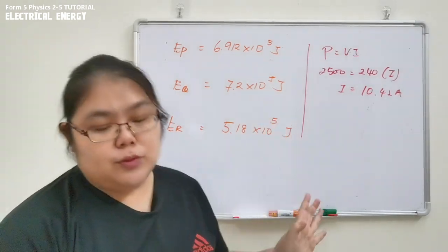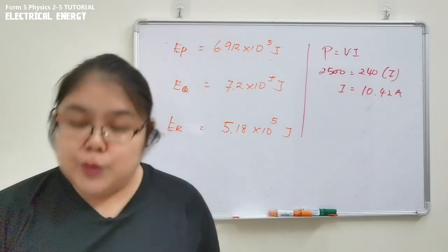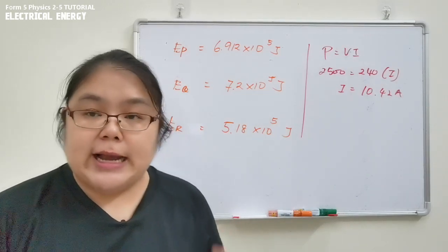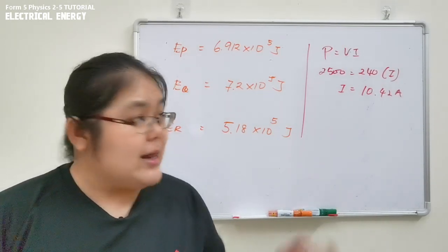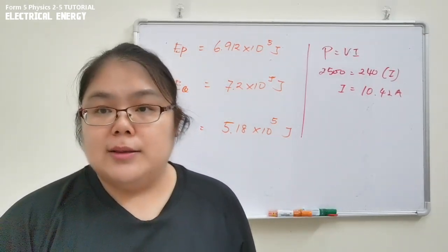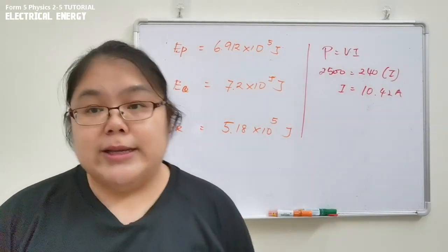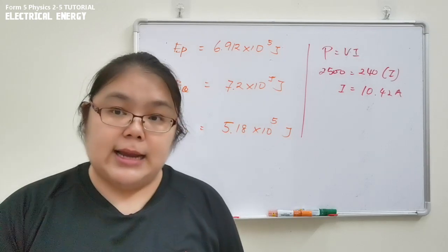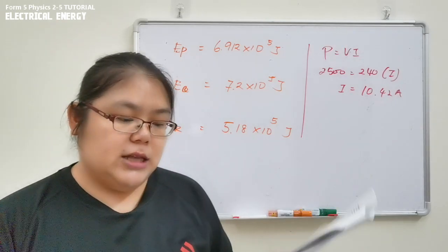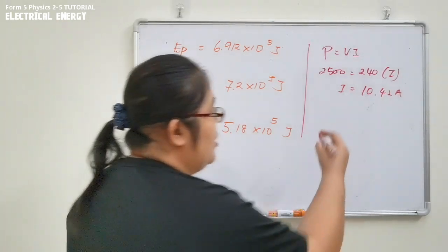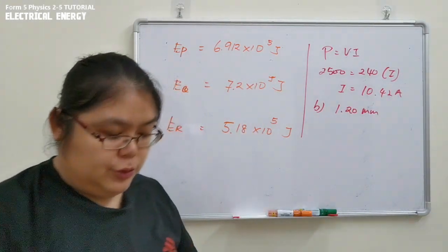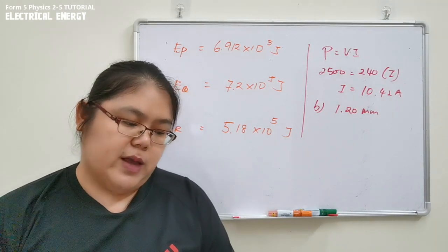Since our current is 10.42 A, we cannot choose the 1 mm wire rated at 10 A because that would be exceeded. We choose the next size up — 1.20 mm — which supports 13 A, slightly greater than the required current. So the answer is 1.20 mm diameter wire.